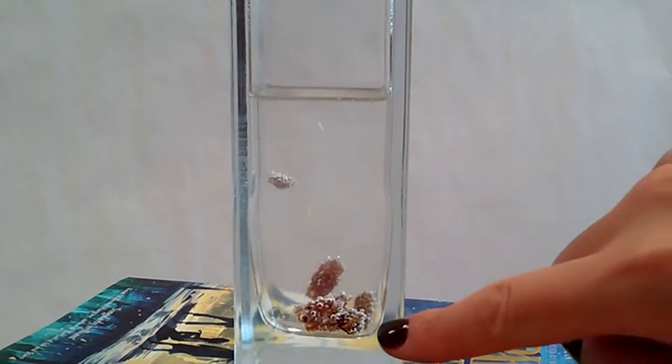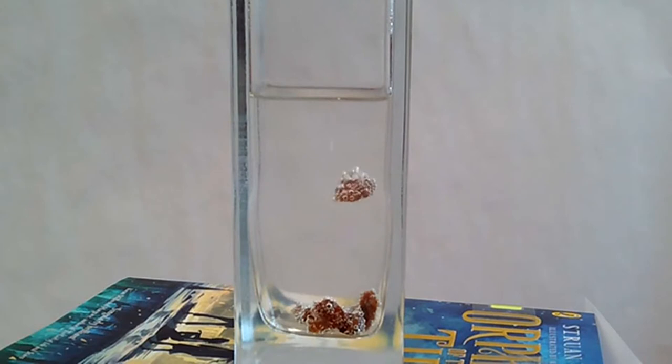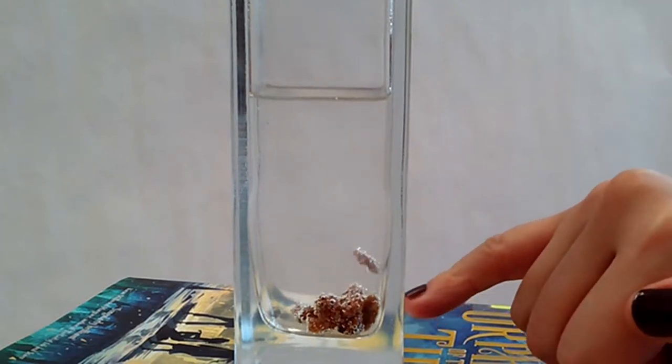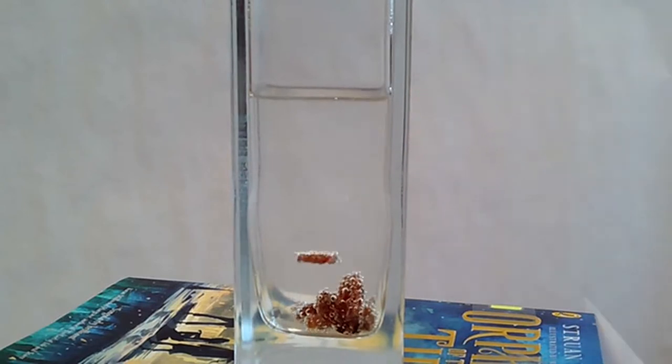Those tiny bubbles that surround the raisins, what do you think that is? Is this solid, liquid or gas? Yeah, they are little bubbles of gas and what's happening is it's making the raisins float to the top.